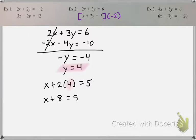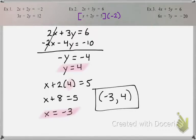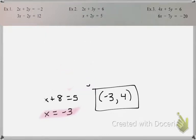When I solve, I get x equals negative 3. And then, write your answer as a coordinate. There you have it. Now let's take a look at this last example.